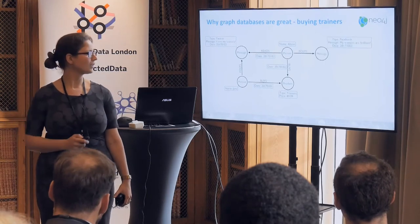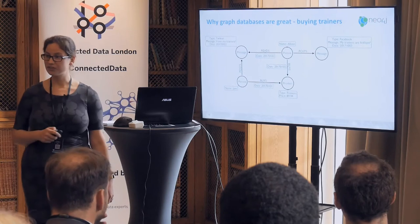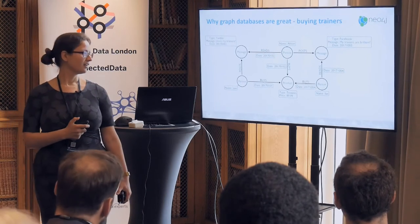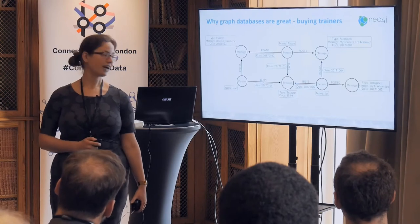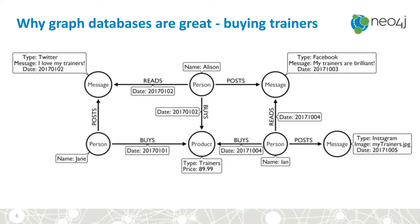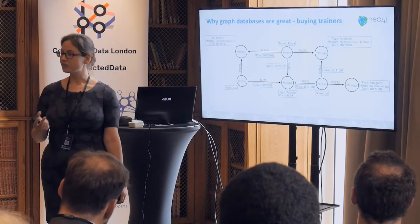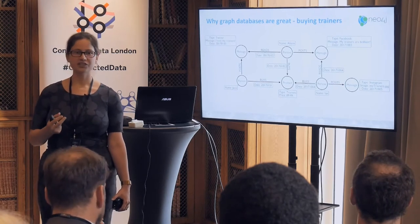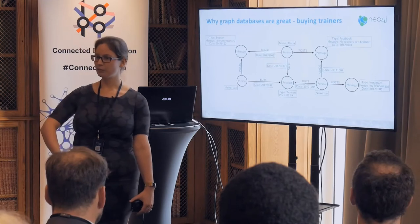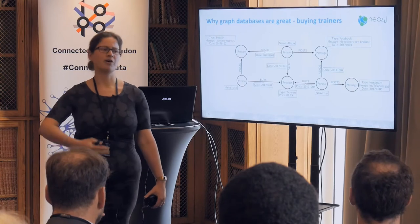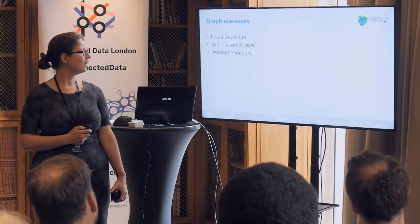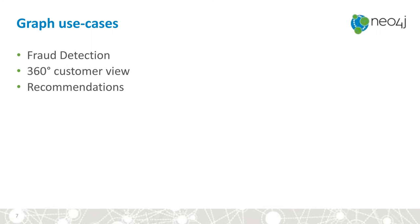Alison posts on Facebook: 'brilliant trainers.' It turns out Ian is friends with Alison on Facebook, reads the post, and also buys the trainers. This is a fantastic thing about graph databases — we can start off with a small model and grow it, build it, add context and more information as it comes along. There's a lot of power here and we're not restricted tightly by a schema. Unlike traditional databases, you have a great deal of flexibility.